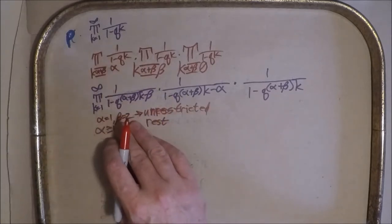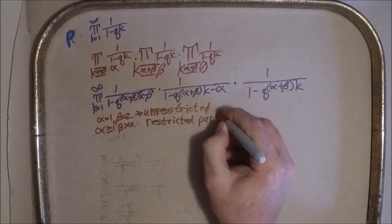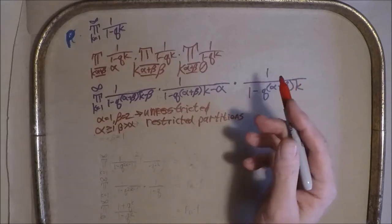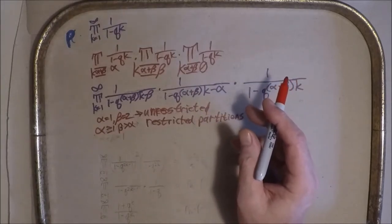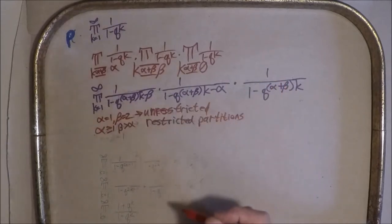For values greater than one, two for alpha and beta, we then get restricted partitions. So what if we go down? Well, the only place to go down immediately sensibly is alpha equals one beta equals one.